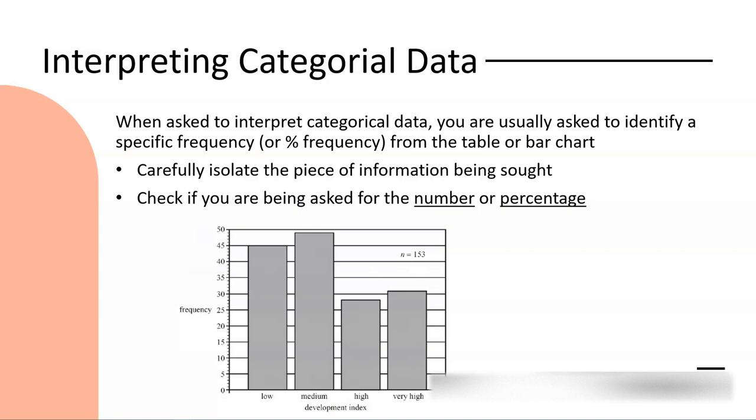Next, we move on to interpreting that categorical data. So when we're asked to interpret it, we're usually asked to identify a specific frequency or percentage frequency from a table, a frequency table, or a bar chart. And so two things to look out for: you want to carefully isolate the piece of information you're being asked for, and then please always check before you give your final answer—are you being asked for the number, the raw frequency, or are you being asked to convert that information to a percentage of the whole data set? And so here is a typical graph that you might be given, a bar chart. We can see what this is given as a frequency. And there is this little information here, N equals 153, means that there are a total of 153 respondents. That will usually be given to you as part of the question as well. So there's 153 pieces of data represented here.